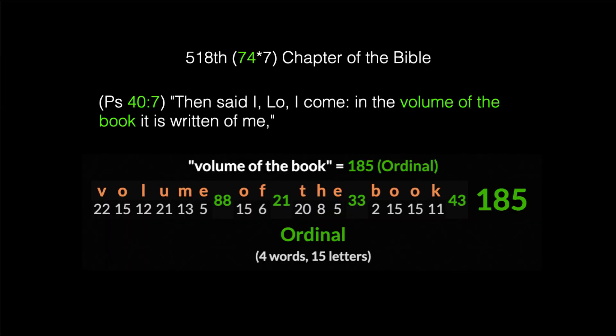Let's go to the 518th chapter of the Bible, which is 74 times 7 — Psalm 40:7. Look at it: 407. 'Then said I, lo, I come in the volume of the book, it is written of me.' The phrase 'volume of the book' has a value of 185 — just like the phrase 'the King of the Jews.'